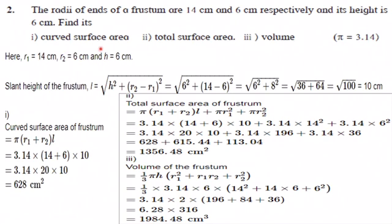First question is curved surface area of frustum. It is pi into (R1 plus R2) into L. Substitute the values of R1, R2, L. So 3.14 into 20 into 10, that is 628 cm square is the curved surface area of frustum.